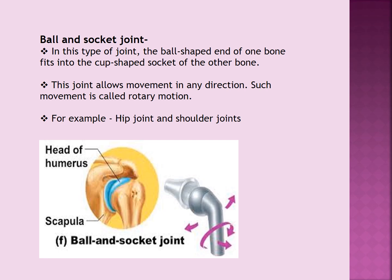First, ball and socket joint. In this type of joint, the ball shaped end of one bone fits into the cup shaped socket of the other. In the picture given below, you can easily see that the head of the humerus gets fixed into the scapula. Humerus is the bone present in your upper arm, which we have already discussed in our previous class. This joint allows movement in any direction.